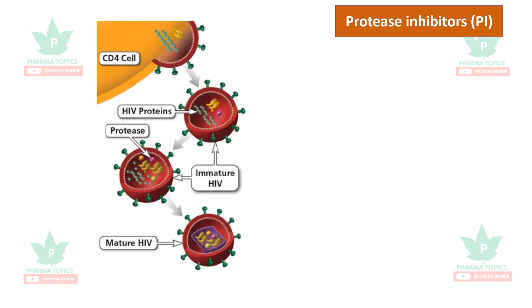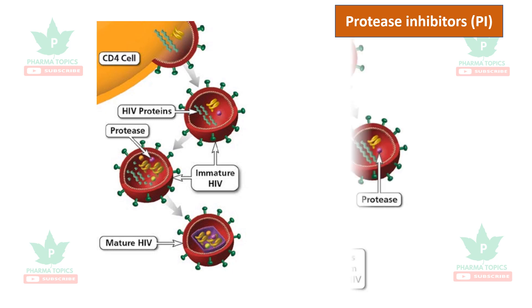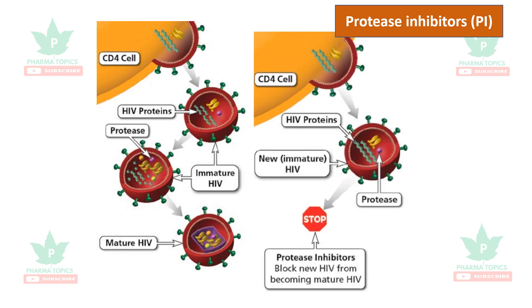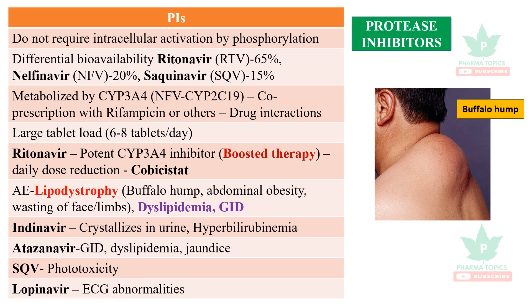Protease is an important enzyme that causes the maturation of the immature HIV virus — converting precursor proteins to functional proteins — and controls viral packaging and budding. This step is blocked by protease inhibitors, which prevent the new HIV virus from becoming a mature HIV virus capable of infecting other CD4 cells.